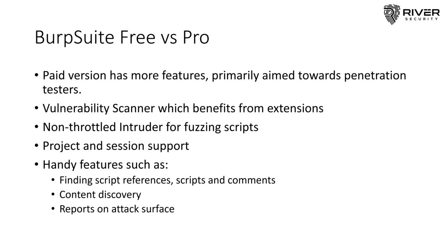One of the best features of the Pro version that you unfortunately don't have in the free version is a vulnerability scanner. It's quite good — built on heuristics, not only signatures. It tends to find low-hanging fruit and some interesting potential vulnerabilities that the pen tester can zoom into and focus their efforts on. You can also extend its features via the extension API, enabling the vulnerability scanner to find more than what the Burp Suite developers had intended.